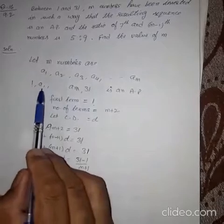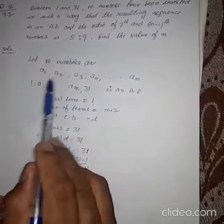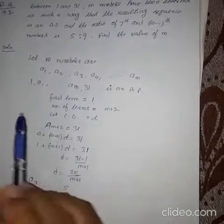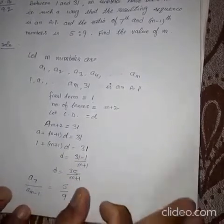You see, A1, it is 2nd term. A2, it will be 3rd term. So 7th, A7 will be 8th term. M minus 1th number will be Mth term.